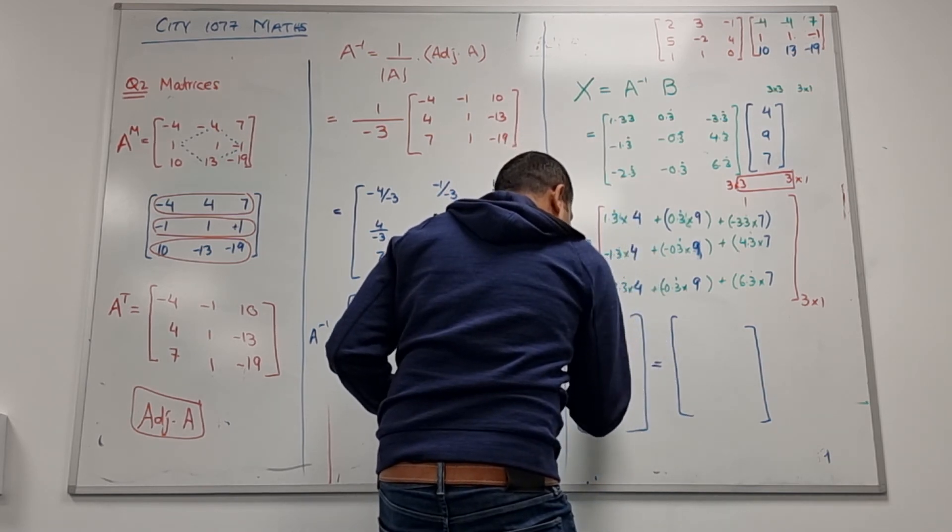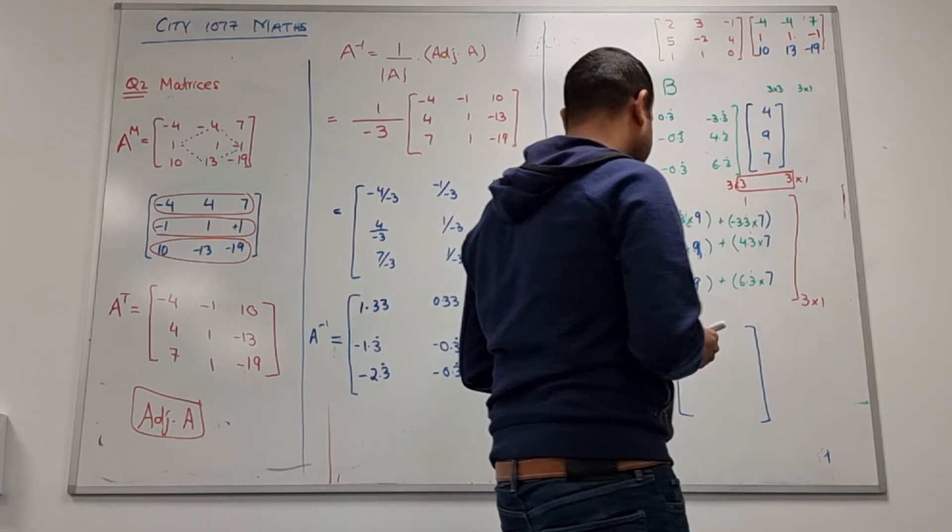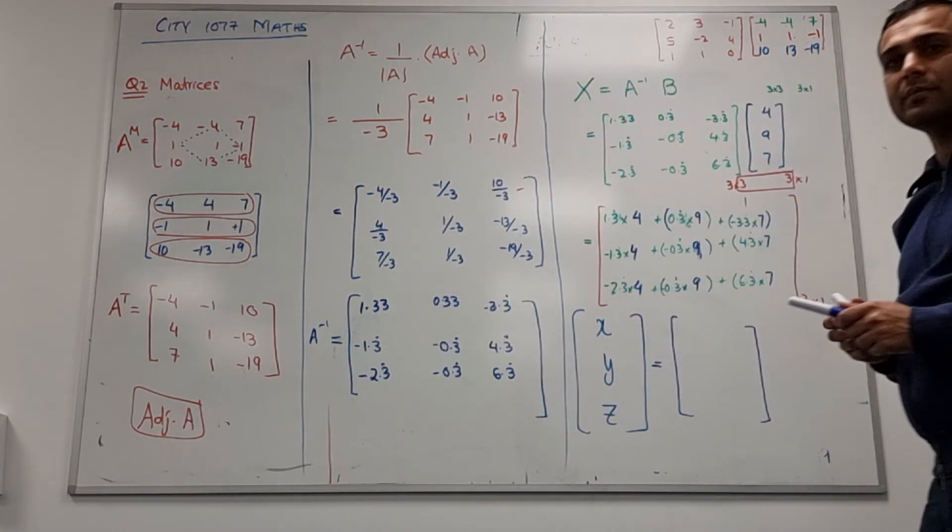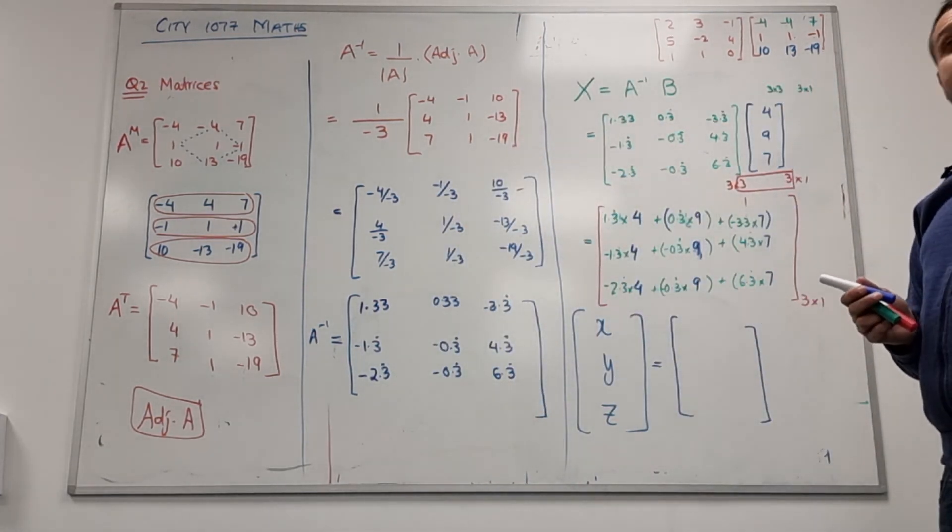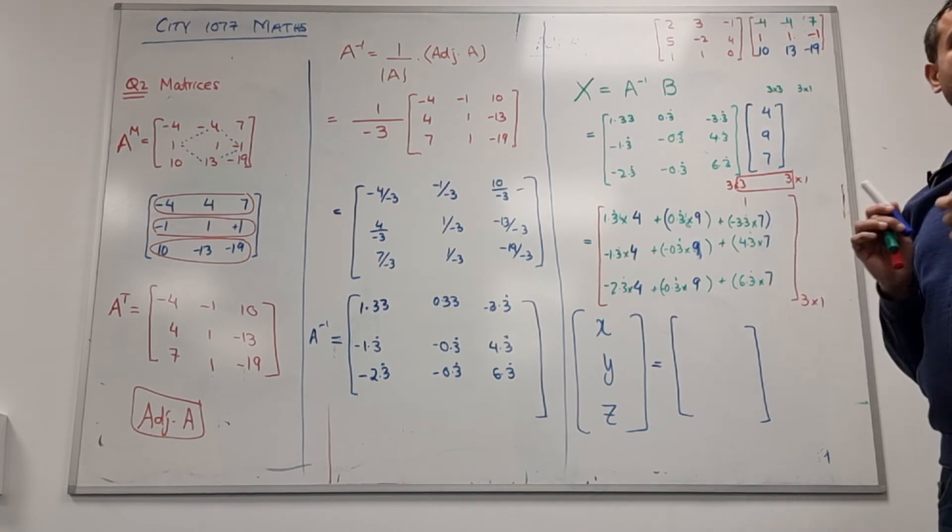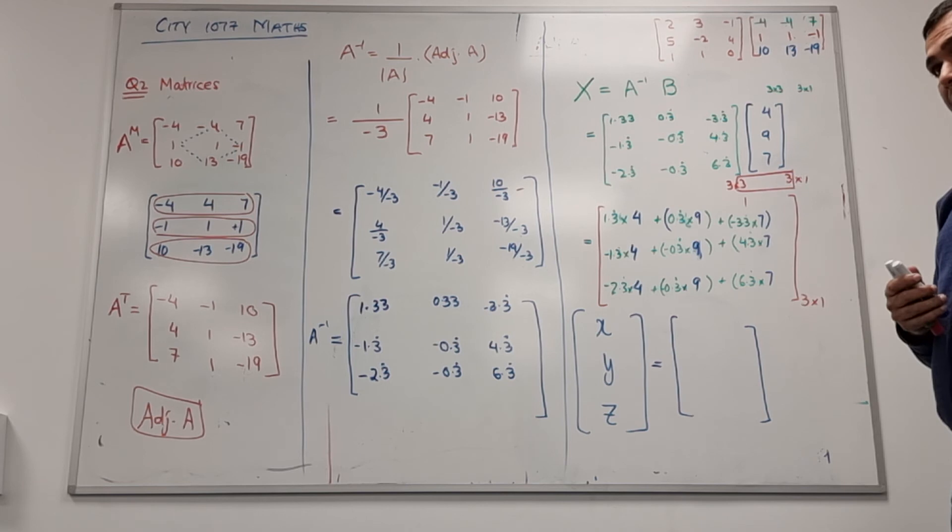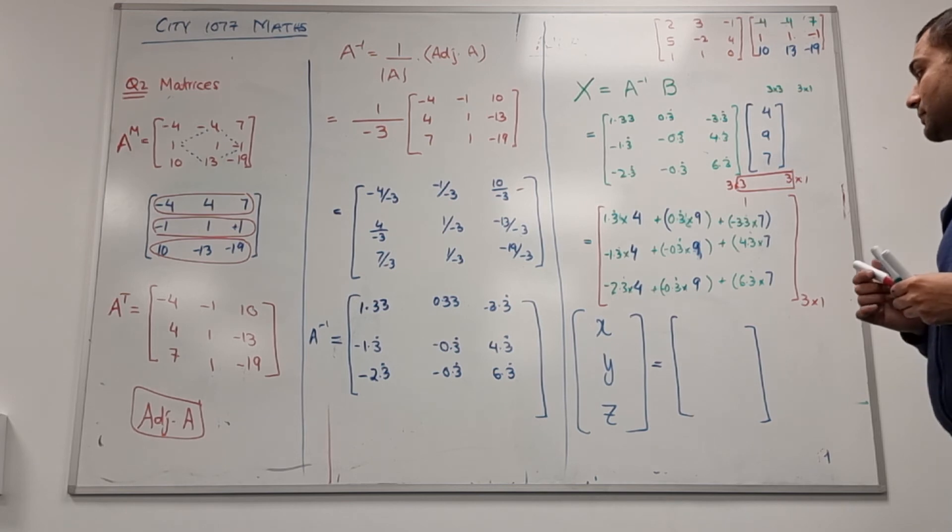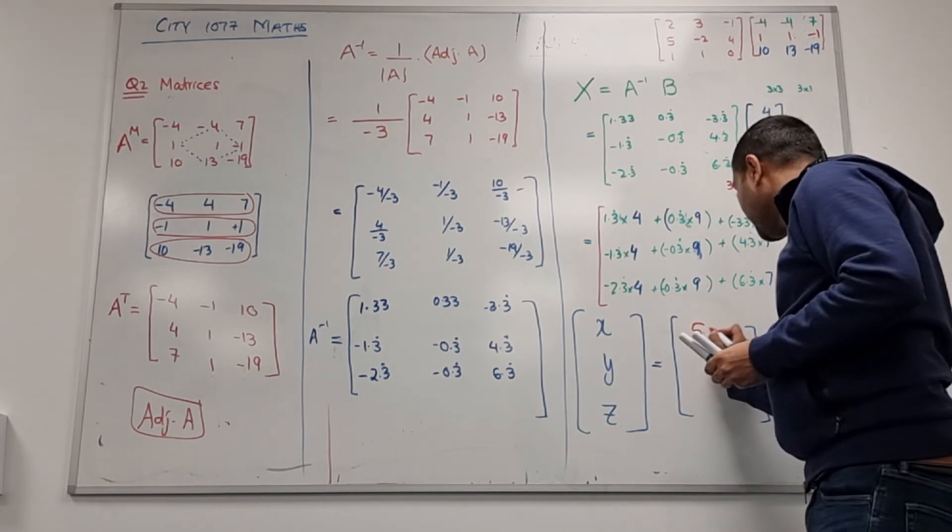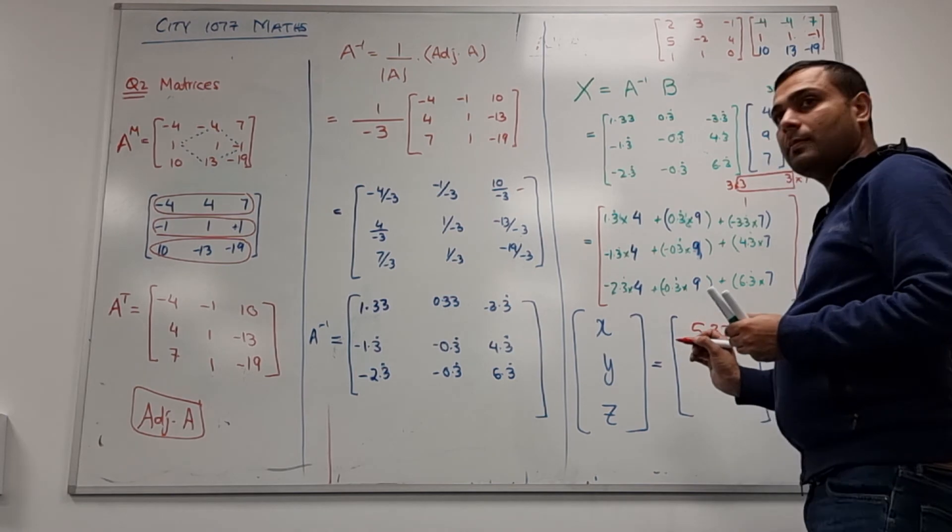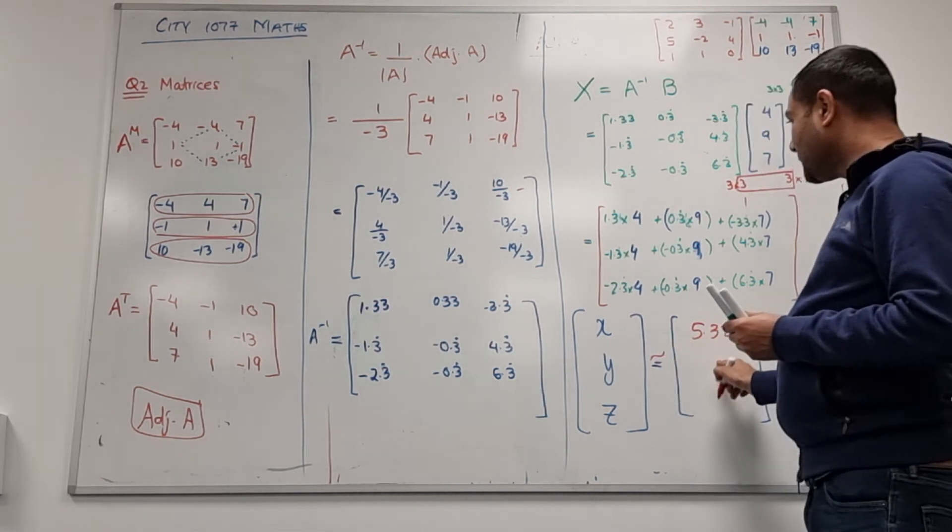And here you will have x, y, z because that was your actual matrix. Anyone, if you put that in calculator just give me the answer please. 5.32? The other one?